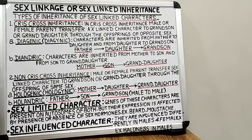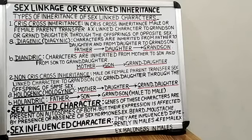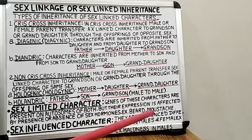Next, we will discuss sex limited characters. These characters are present in one sex and absent in the other sex. However, their genes are present in both sexes and their expression is dependent on sex hormones. For example, secondary sexual characters are located on autosomes and these genes are present in both males and females, but their effect depends upon the presence or absence of sex hormones. For example, genes for beard and moustache express their effect only in the presence of the male hormone testosterone.